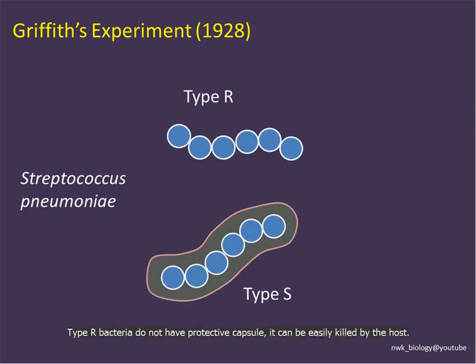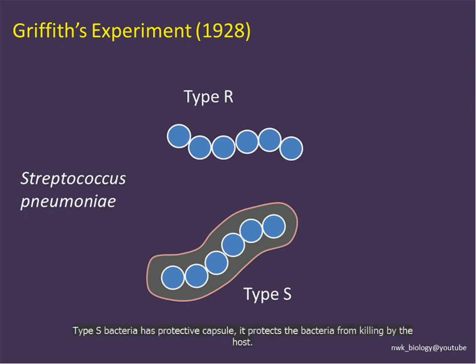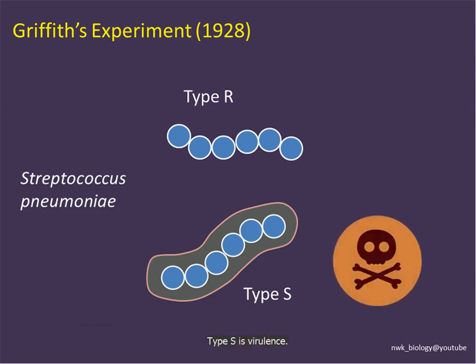Type R bacteria do not have a protective capsule, so they can be easily killed by the immune system of the host. While type S bacteria has a protective capsule that protects the bacteria from being killed by the immune system. So we say type S bacteria is virulent.